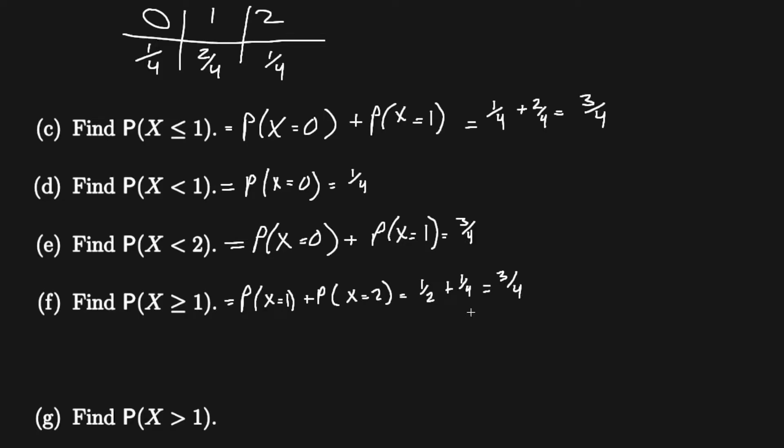Or we can write this in a different way where it's one minus the probability of X less than one, which is just equal to one minus one fourth, which is the same thing, three fourths.